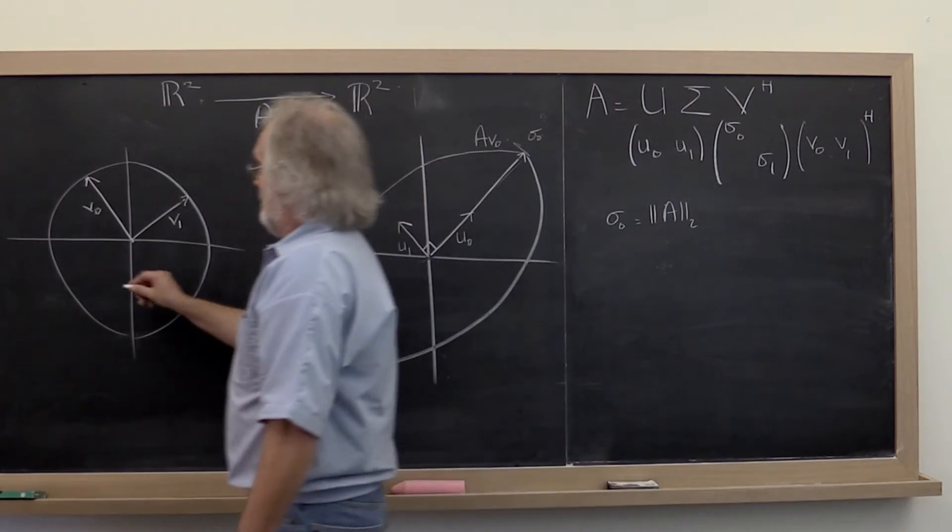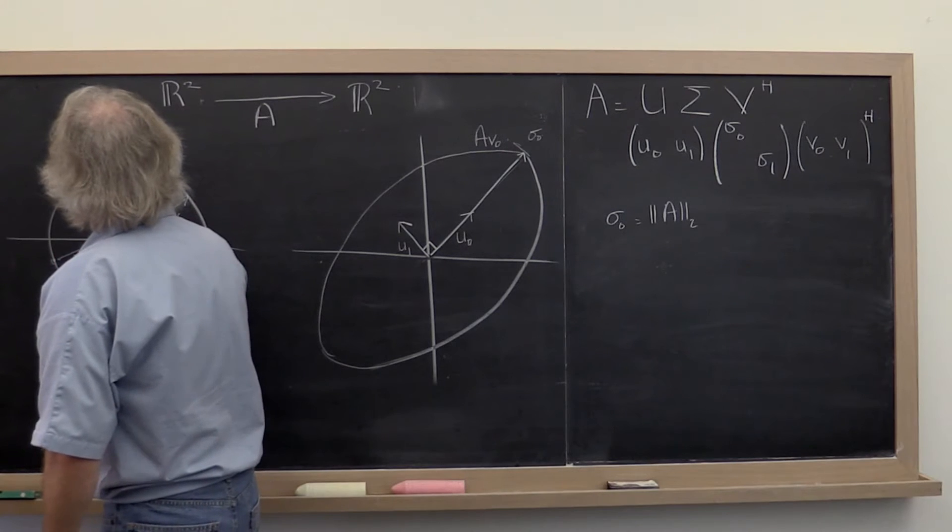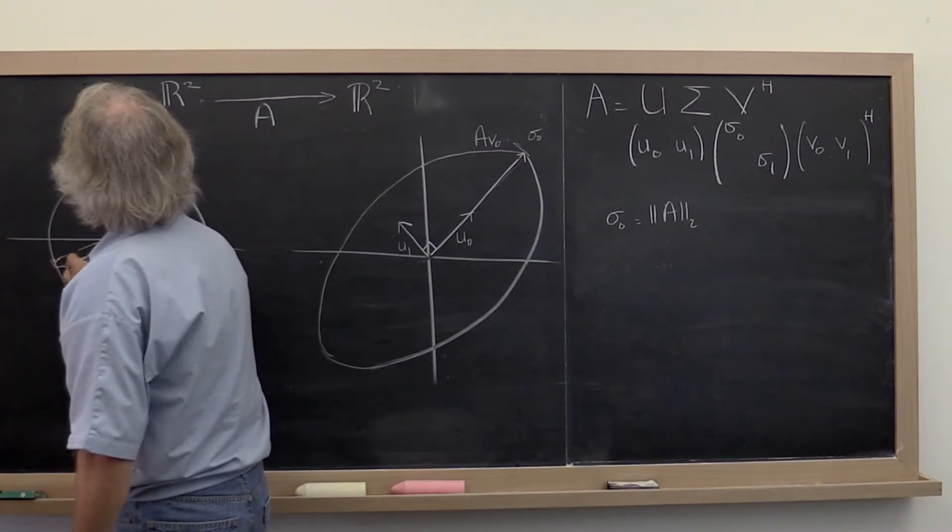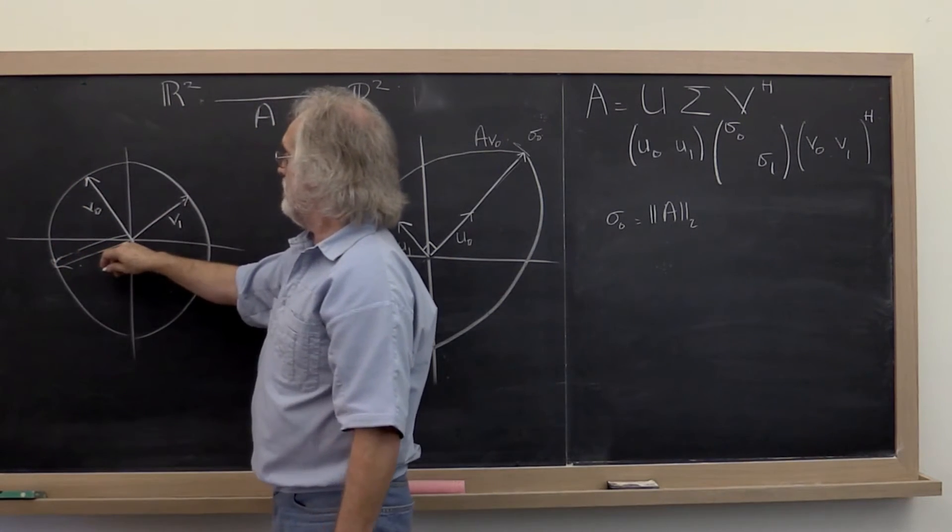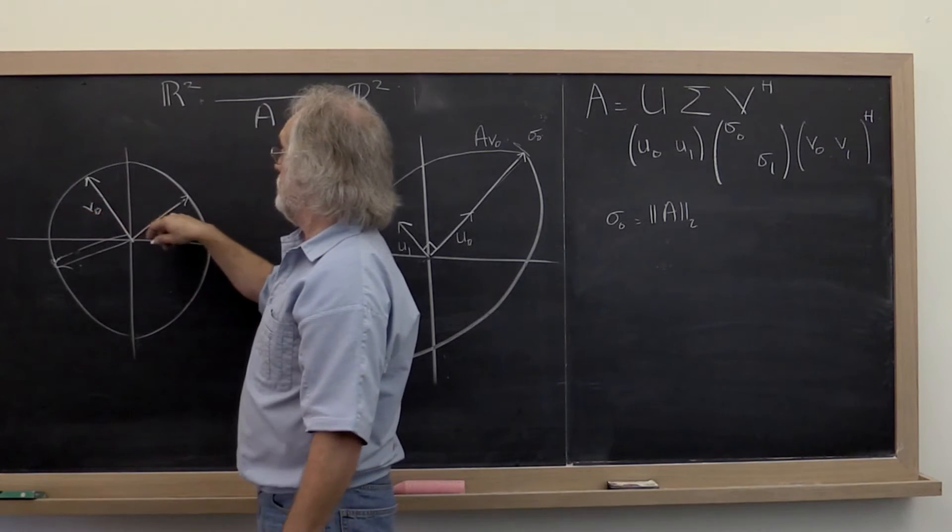If you now take any vector on the unit circle, that vector can be written as a linear combination of these two vectors.